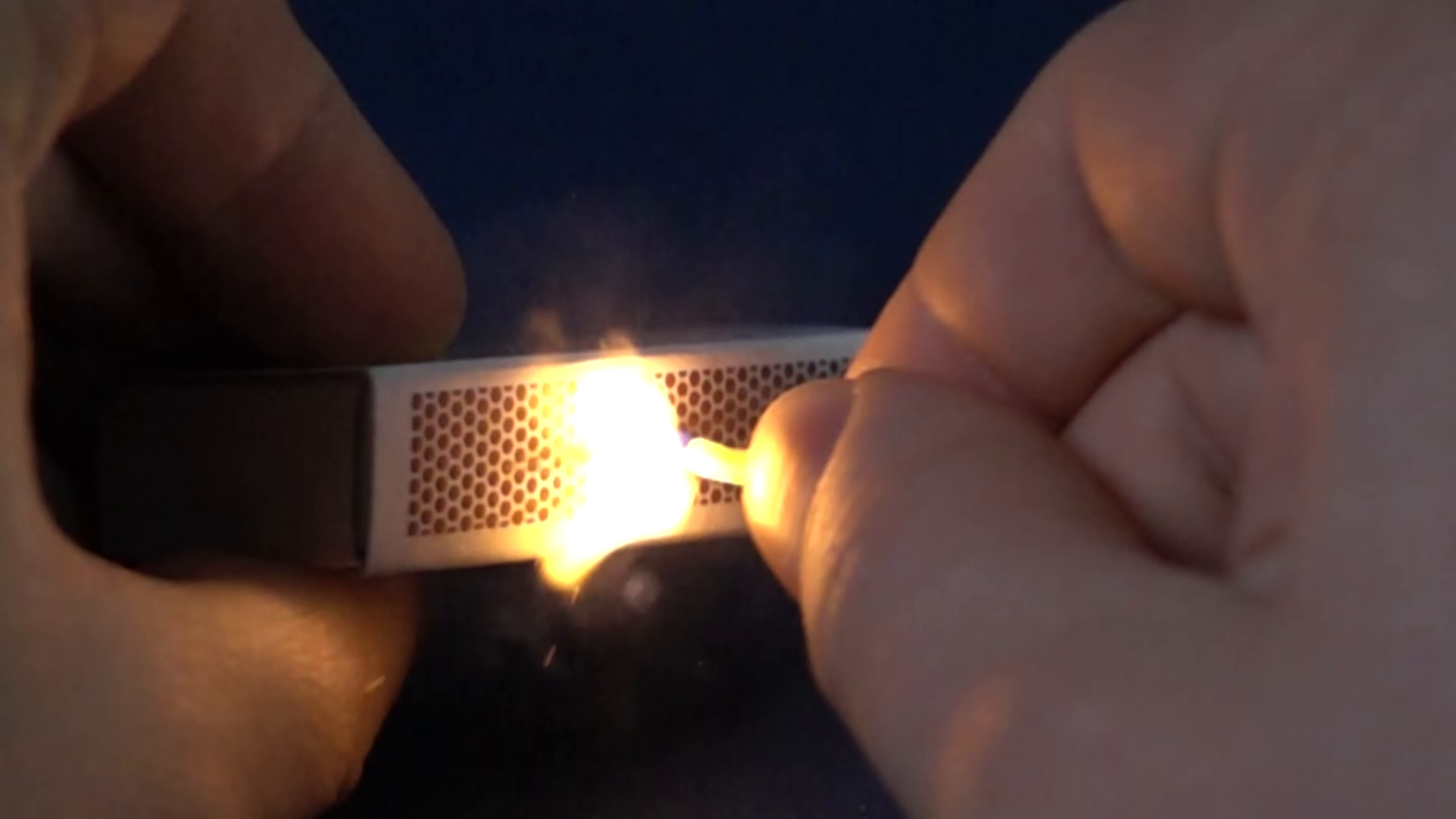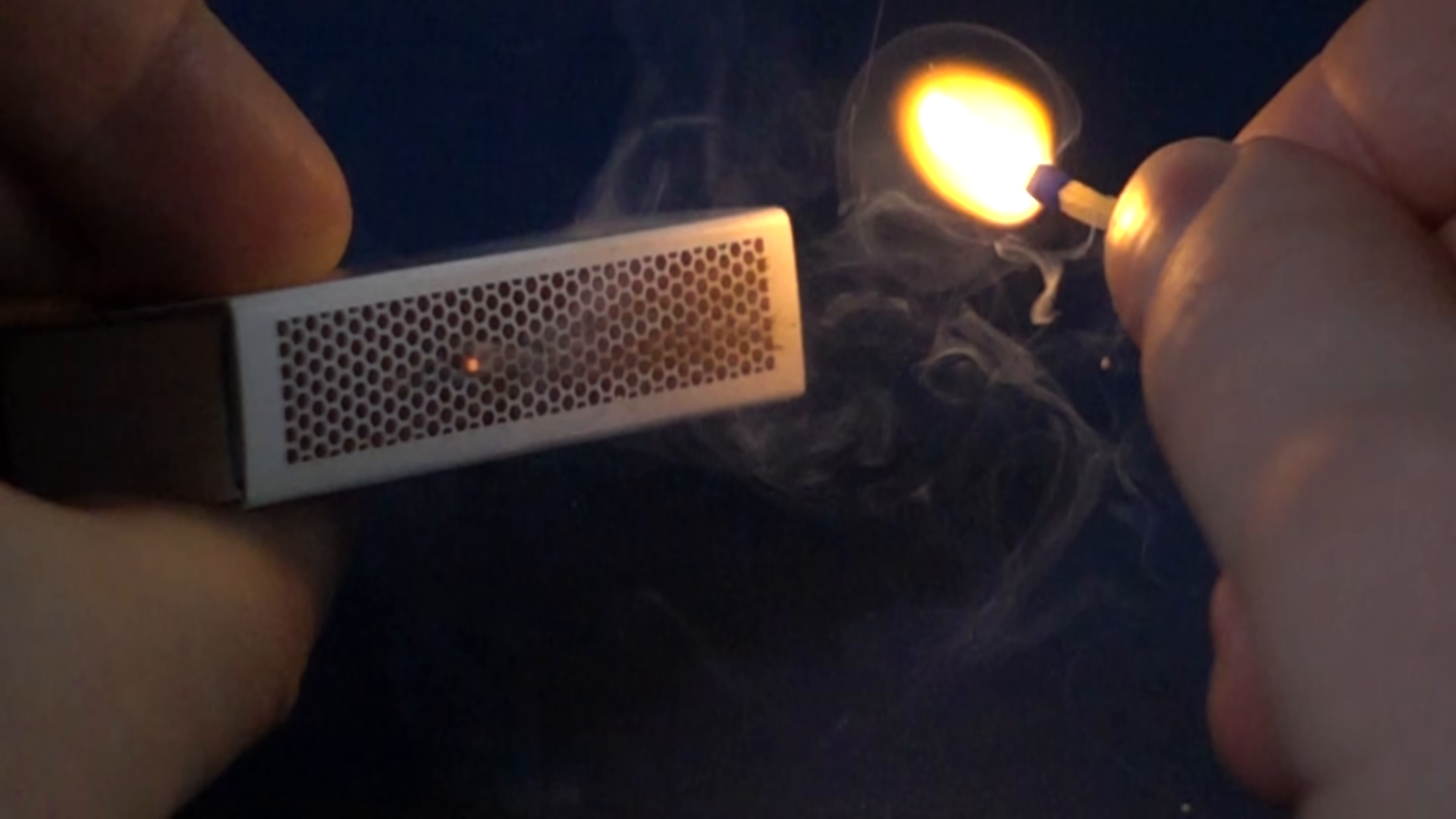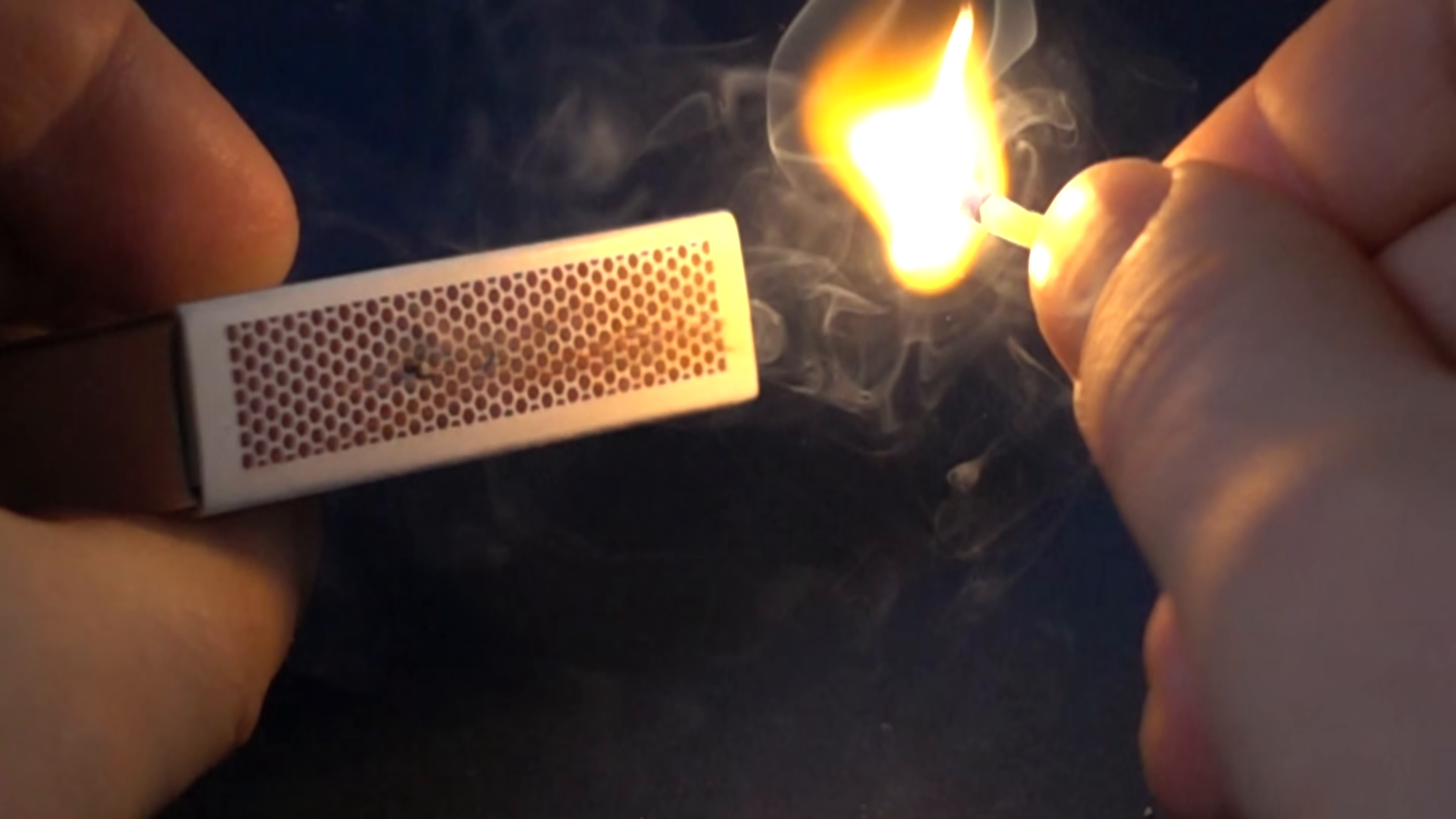During the friction process of a match with the box, the potassium chloride contained in the match head oxidizes the phosphorus, releasing heat that ignites the composition of the match head.